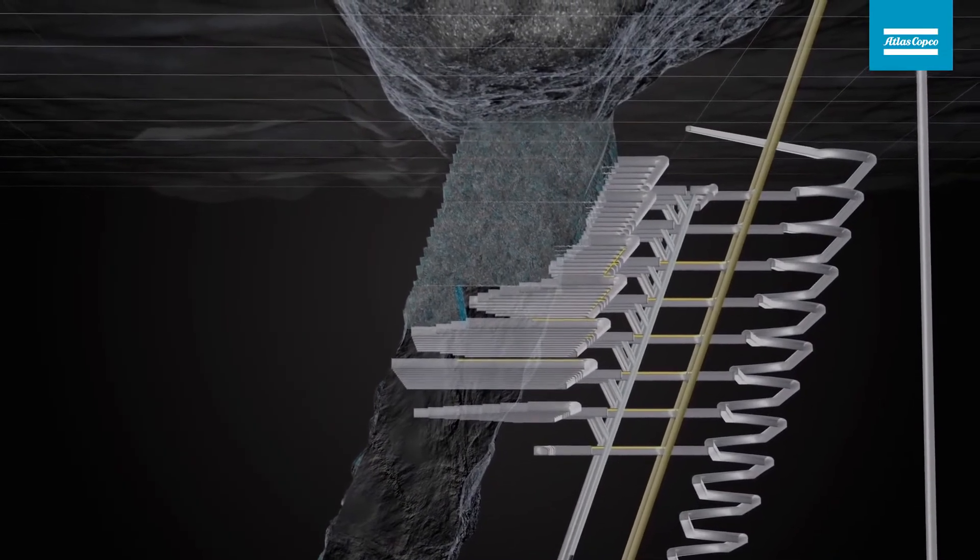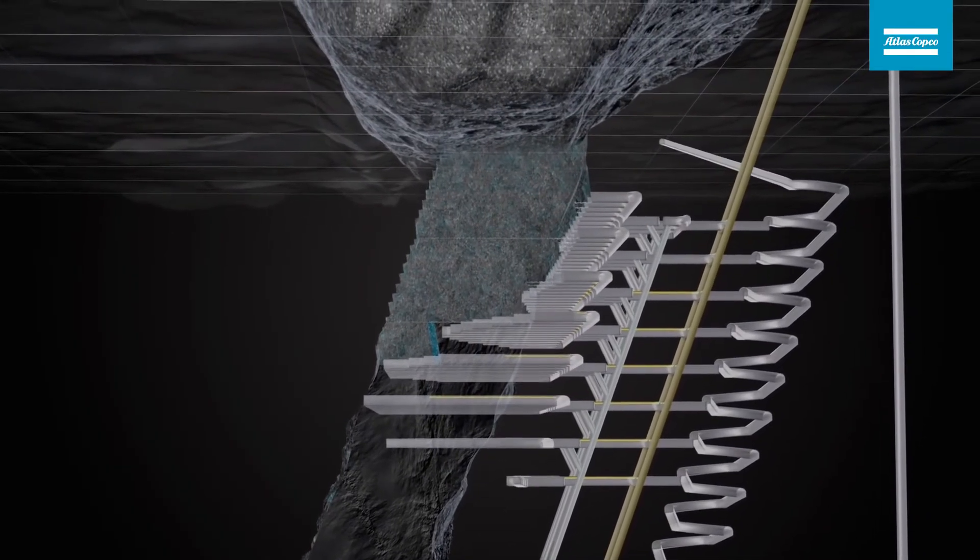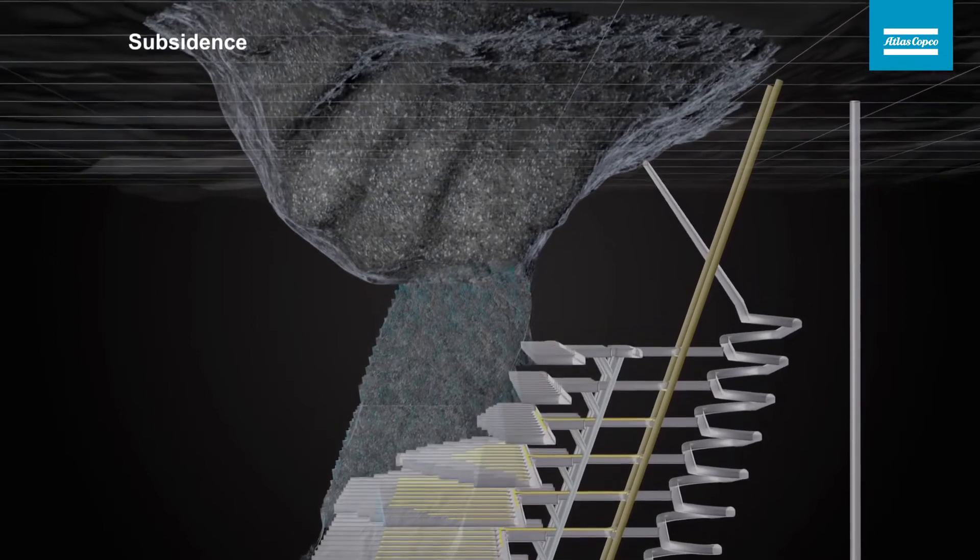Due to caving of waste rock into the blasted ore, a certain degree of ore loss and waste rock dilution comes with the method. Caving will sooner or later also cause subsidence on the surface.